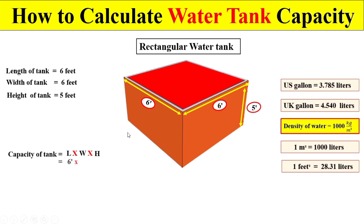The length of this water tank is 6 feet, the width is 6 feet, and the total depth is 5 feet. If we multiply these three terms — 6 × 6 × 5 — we get 180 cubic feet as the total capacity of the water tank.